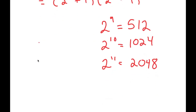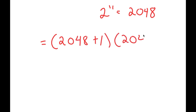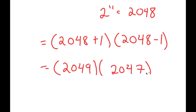So now I get 2048 plus 1 times 2048 minus 1. Now, 2048 plus 1 is 2049, and 2048 minus 1 is 2047. So I get 2049 times 2047.